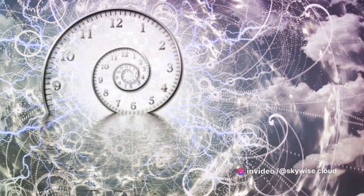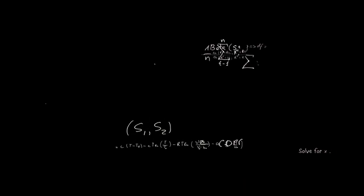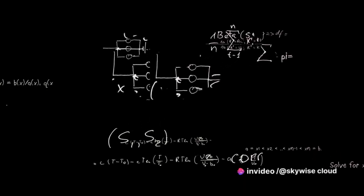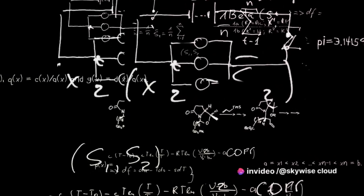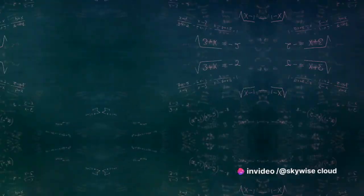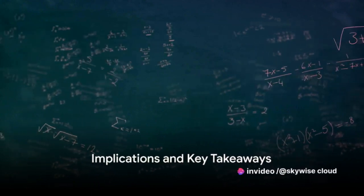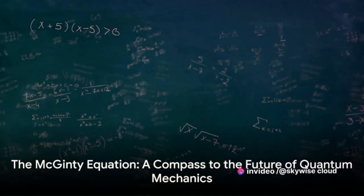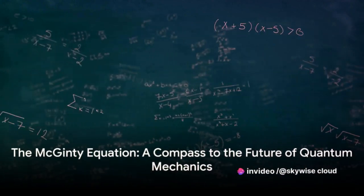So, as we continue our dance with the McGinty equation, let's remember that every step, every modification, is a step closer to understanding the grand choreography of the universe. All this math and science are well and good, but what does it mean for us and the future of quantum mechanics?